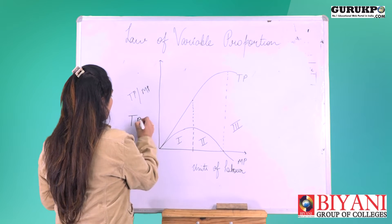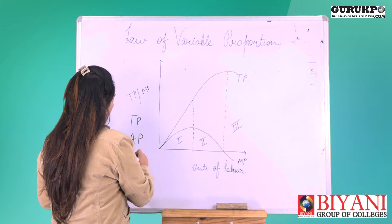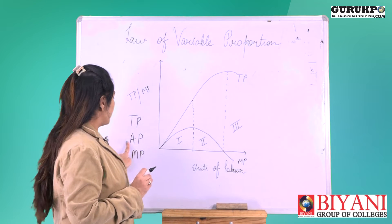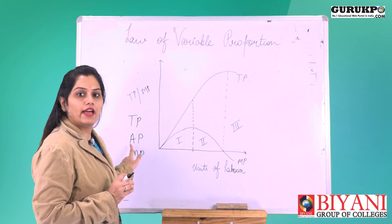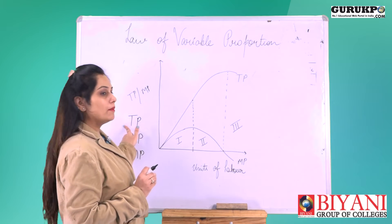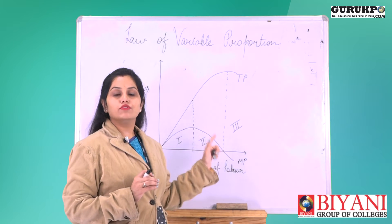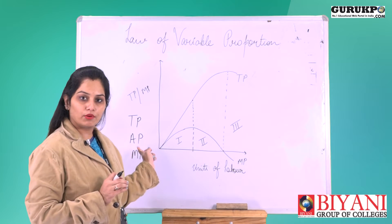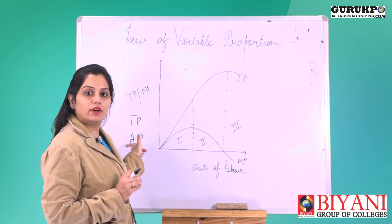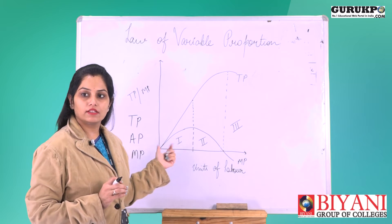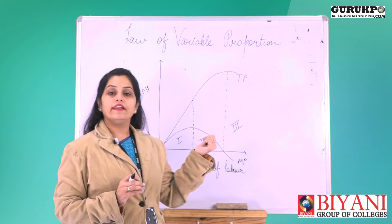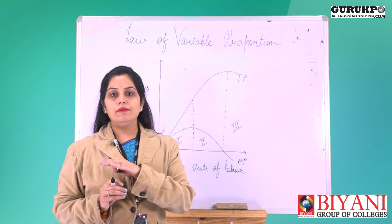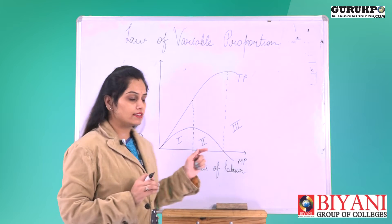The main elements are TP, AP, and MP. TP is total product, MP is marginal product, and AP is average product. Total product is the total output generated using all the factors of production. Average product is the per unit output. Marginal product is the addition to total product when we add variable factors while keeping some factors fixed.